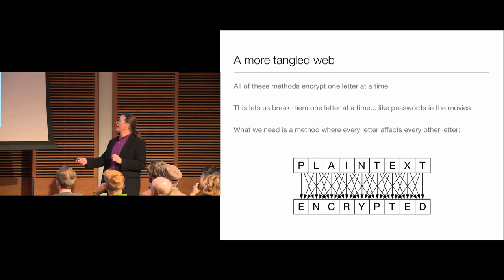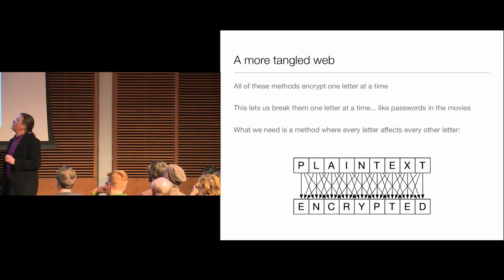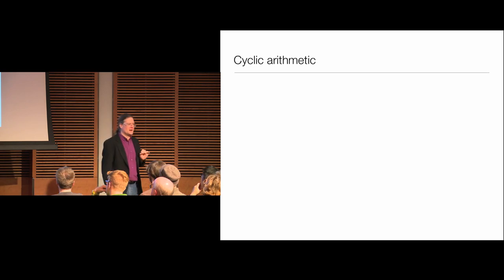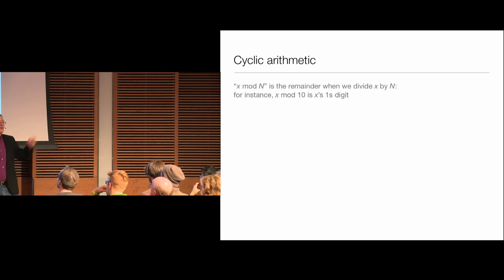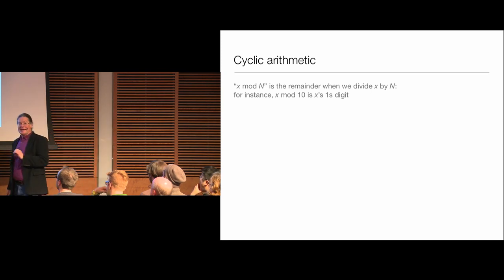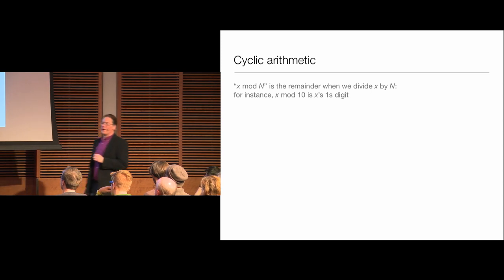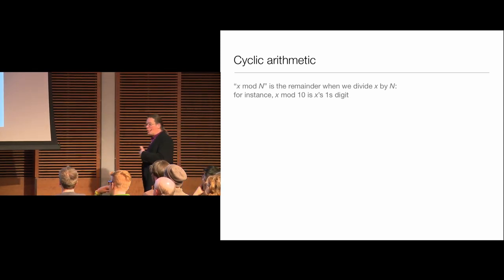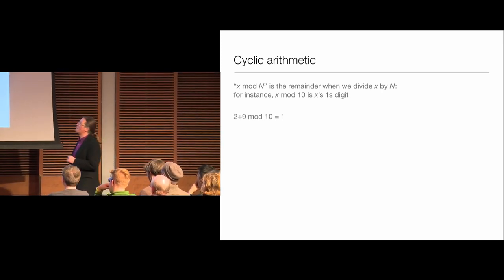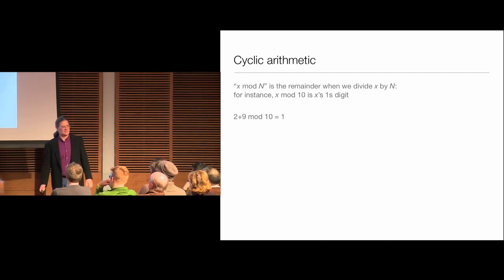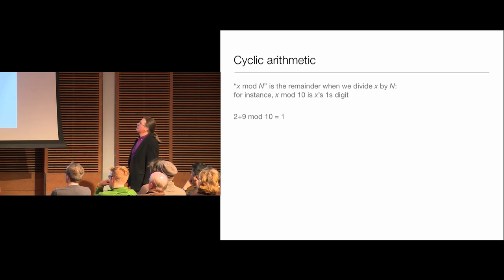We want some complicated mathematical relationship between the plain text and the encrypted message. First, a little modular arithmetic. A number mod n is the remainder I get when I divide by n. For instance, x mod 10 is the ones digit of x — 53 mod 10 is 3. So 2 plus 9 is 1 mod 10, because the remainder of 11 after dividing by 10 is 1.